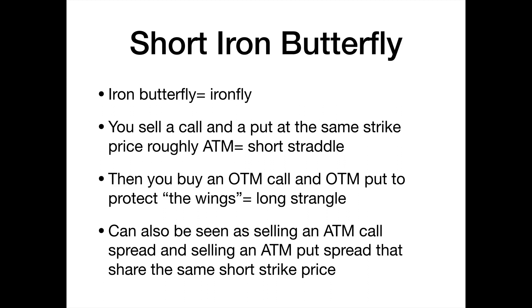This is one reason it's called a butterfly. To hedge against the stock moving up a lot, you buy an out of the money call, and to hedge against the stock moving down a lot, you buy an out of the money put — to protect the wings. The whole trade can also be seen as selling an at the money call spread and selling an at the money put spread, where both spreads share the same short strike price.